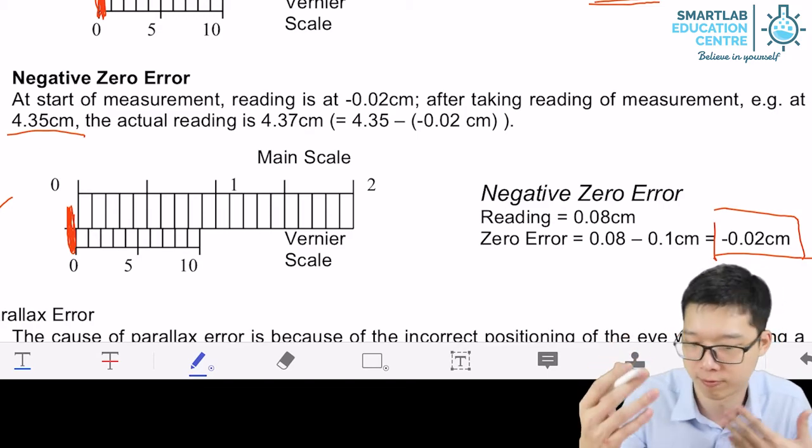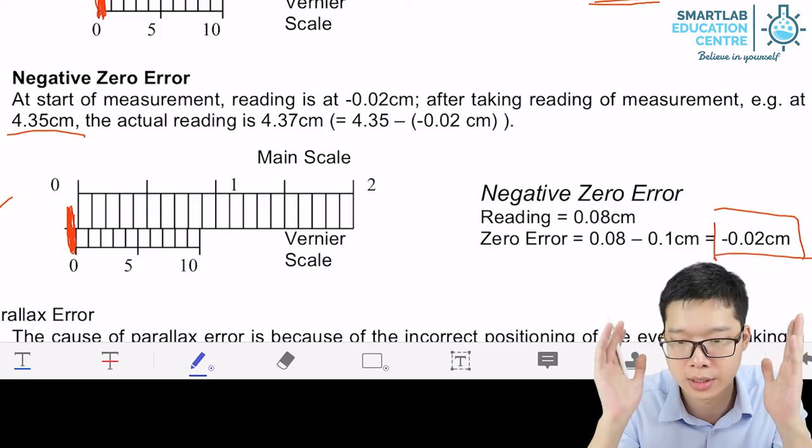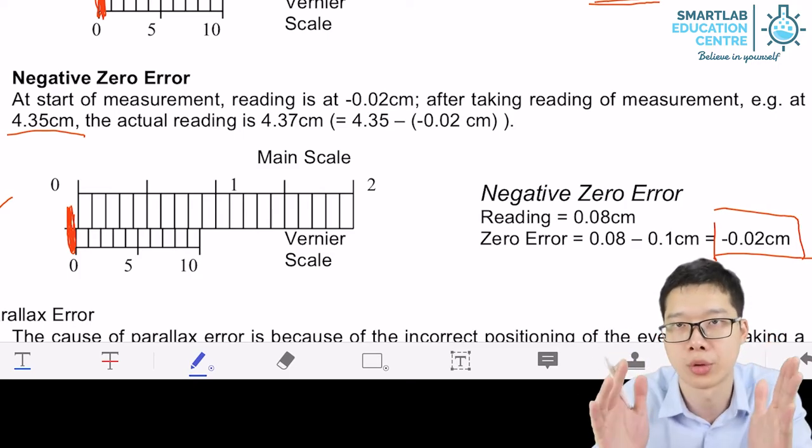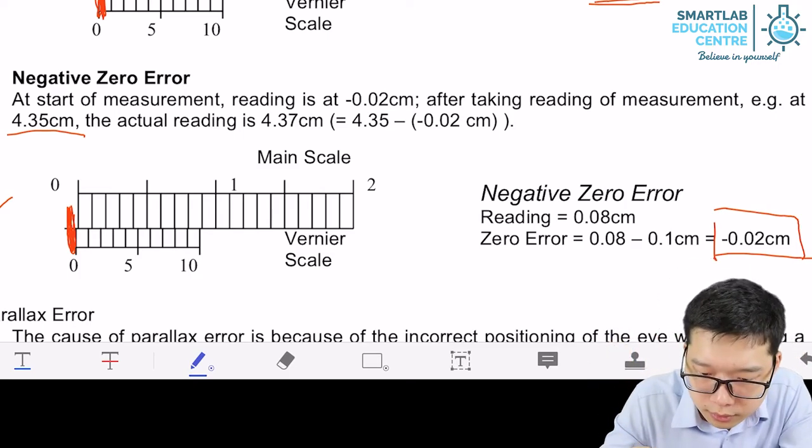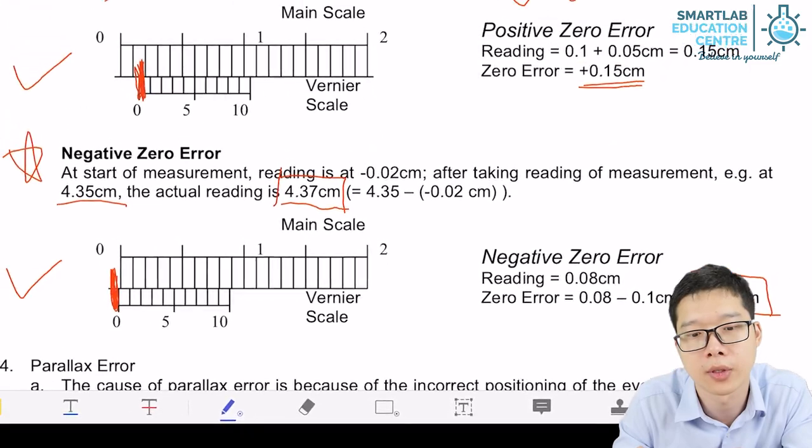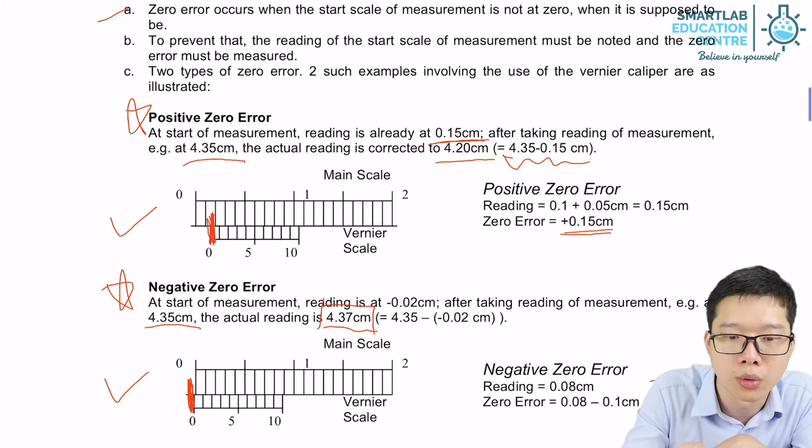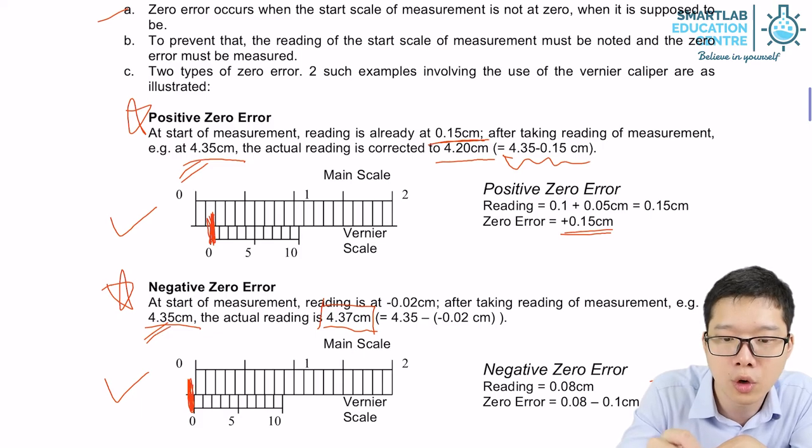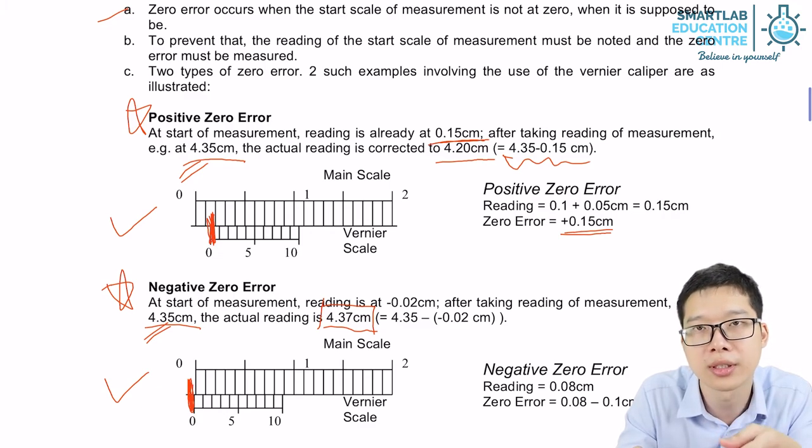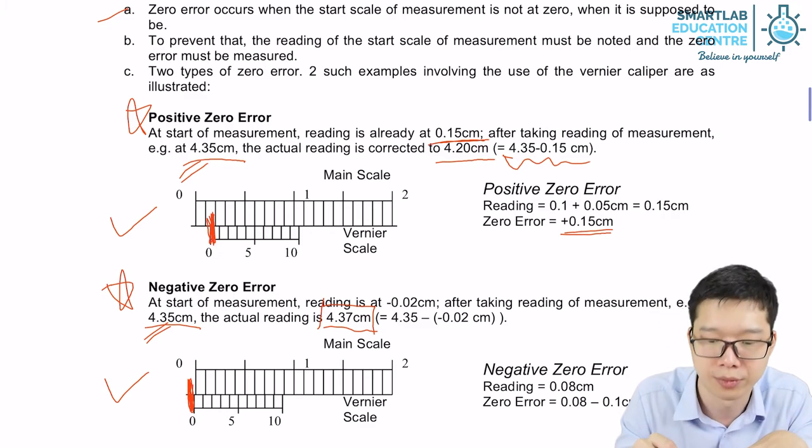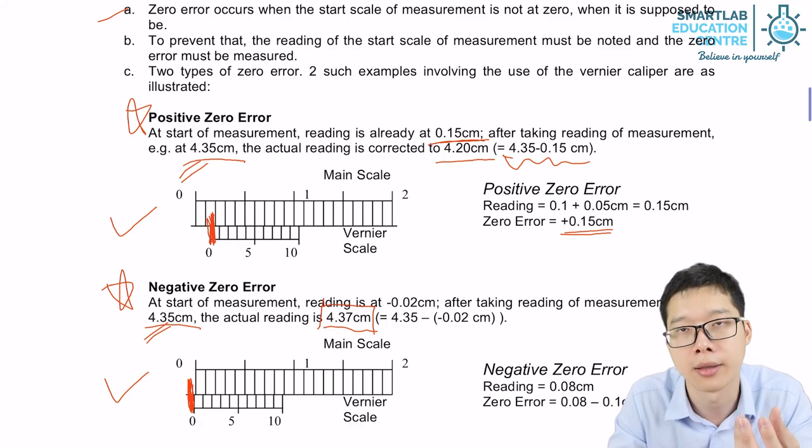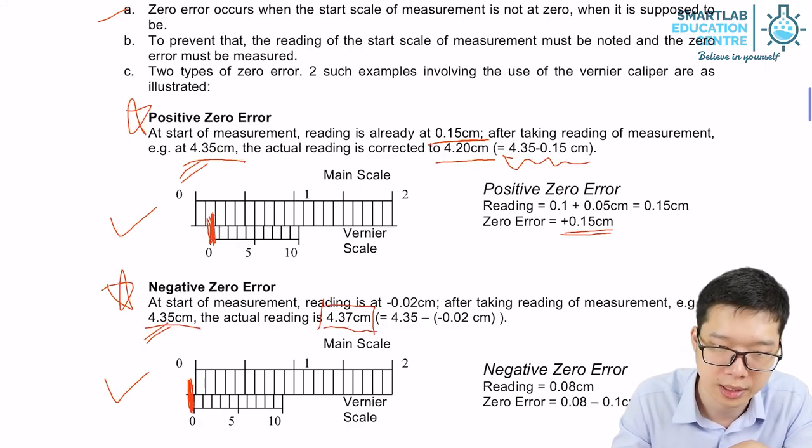So to be friendly, to be user friendly, we just stick to minus away. Error can be either positive or negative, but dealing with error, we always minus them away. So eventually, the actual reading is 4.37. So can you see that although we have the same reading 4.35 cm, but if we have a positive zero error, we minus away, we get something shorter than 4.35 or 4.20. If you have a negative zero error, we minus away, we have 4.37, which is actually longer than the reading itself. So these are zero errors.